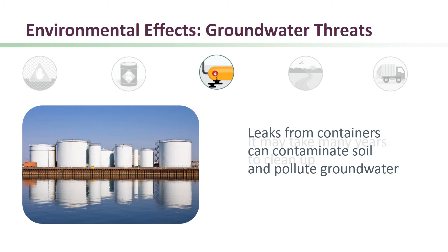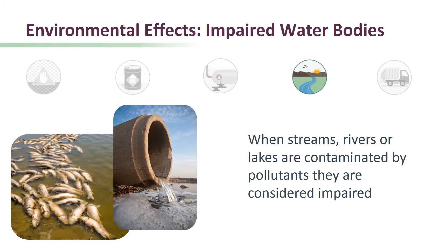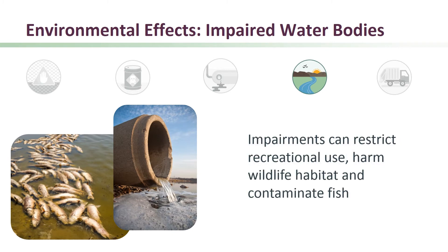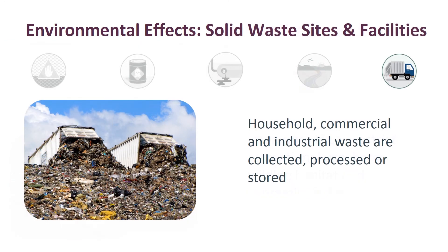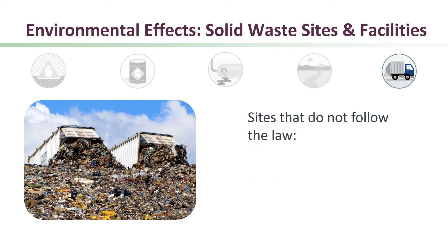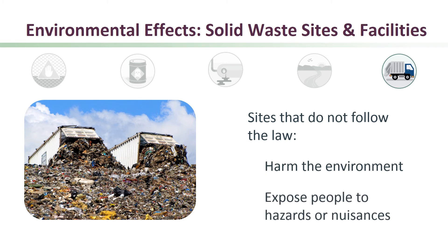When leaks occur, it may take many years to clean up the land and groundwater. When water bodies like streams, rivers, or lakes are contaminated by pollutants, they are considered impaired. These impairments are related to the amount of pollution in or near the water body, and can restrict recreational use, harm wildlife habitat, and contaminate fish that people may eat. Solid waste facilities are places where household, commercial, and industrial waste are collected, processed, or stored, including landfills and composting or recycling facilities. Most of these operations have permits, but some are illegal. Illegal sites and regulated facilities that do not follow the law can harm the environment and expose people to hazardous chemicals or nuisances.